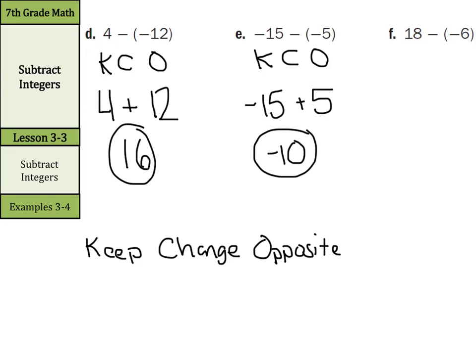Lastly, 18 minus negative 6: keep the 18, add, and the opposite of negative 6 is positive 6. Same signs, so just add: positive 24.